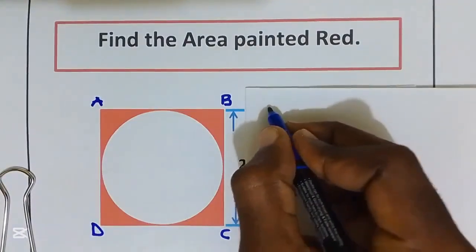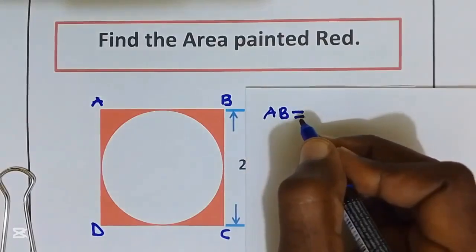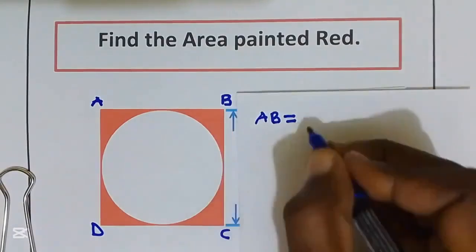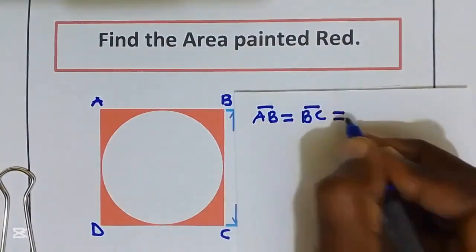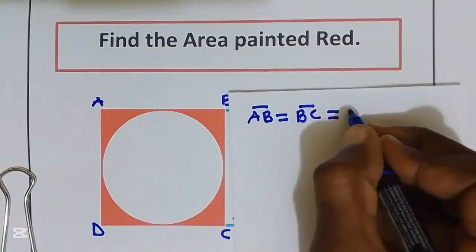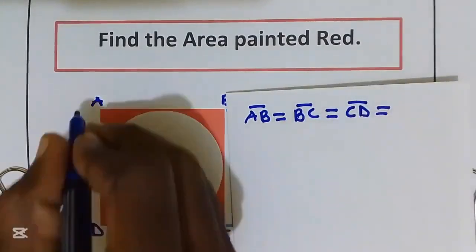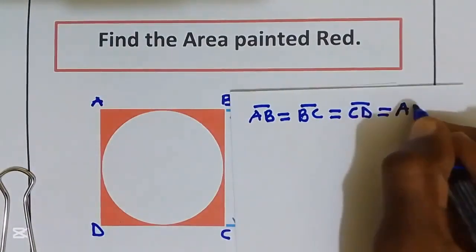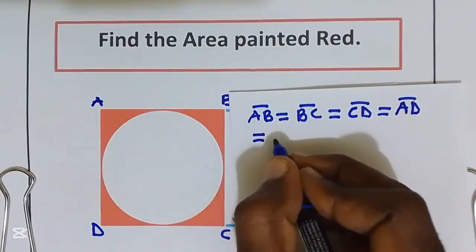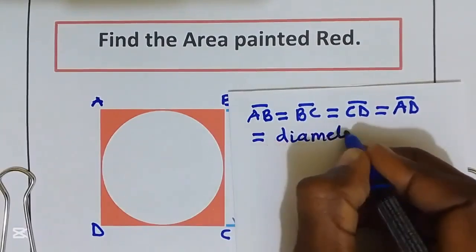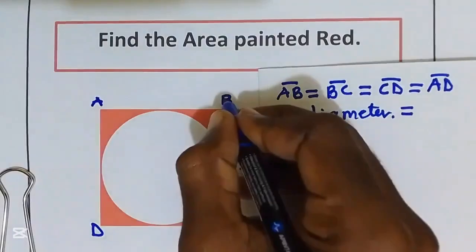Since distance AB is equal to distance BC is equal to distance CD is equal to distance AD, and all of these are equal to the diameter which is equal to 28 cm.